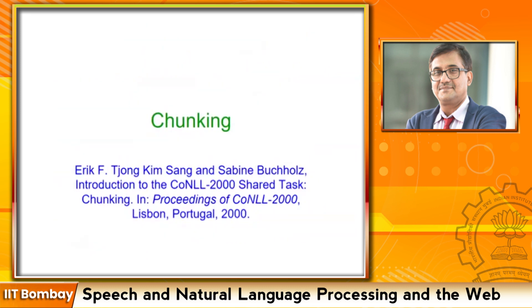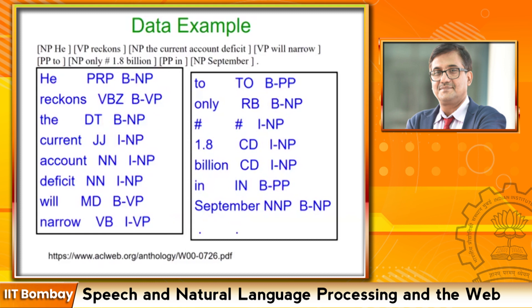Let me introduce the chunking problem. You should look at the CoNLL 2000 shared task paper on chunking placed in Moodle and Teams. This was a large-scale computational scenario where chunking was introduced. Before that, Abney dealt with shallow parsing — non-recursive parsing. In chunking, you have B and I tags. The example sentence is: 'He records the current account deficit will narrow to only $1.8 billion in September' — a sentence referenced in many papers from that CoNLL platform.